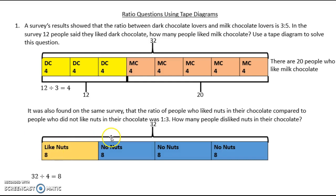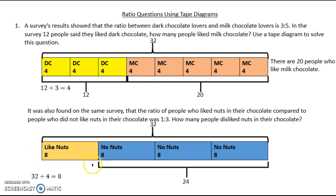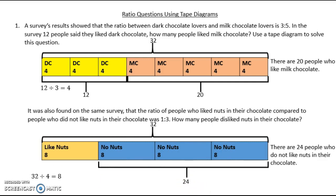Now I need to evenly distribute these 32 people over the four segments. So again I'm doing a division problem: 32 divided by 4, which equals 8. I'm going to write 8 in each one of these segments. The people who don't like nuts are in the blue section — that's 8 times 3, because there are three segments with 8 people each, which equals 24. So there are 24 people who do not like nuts in their chocolate.